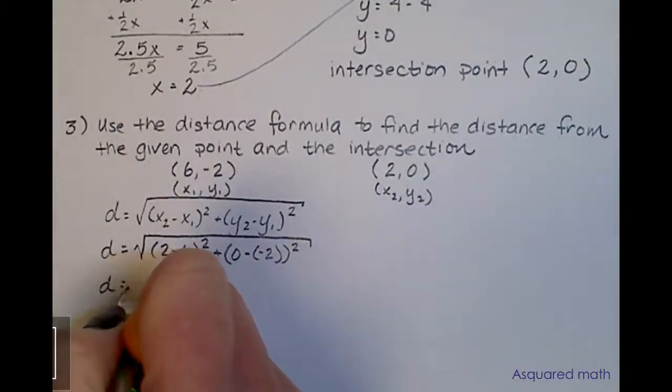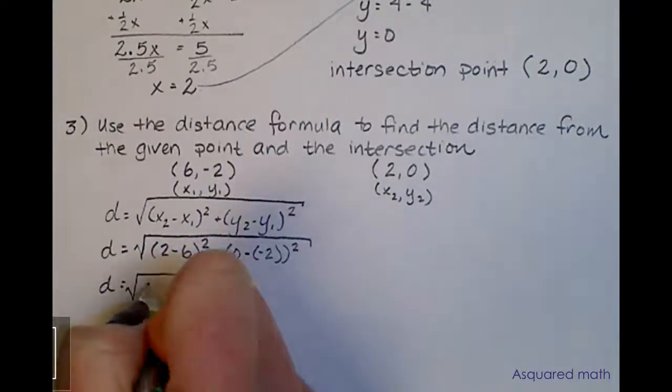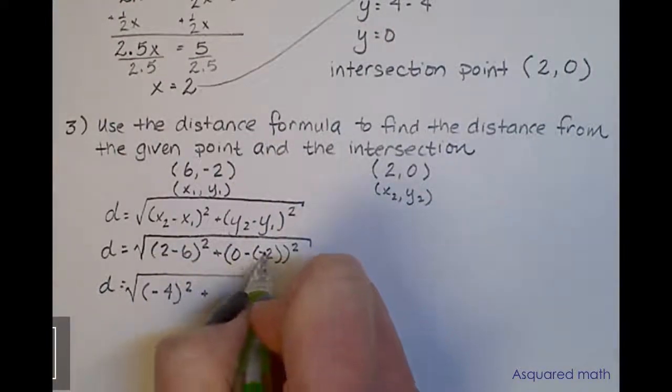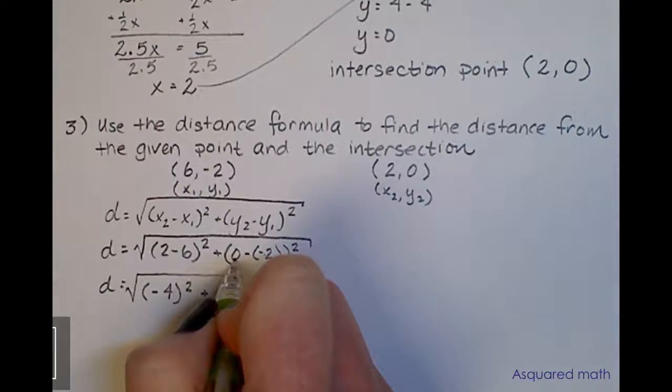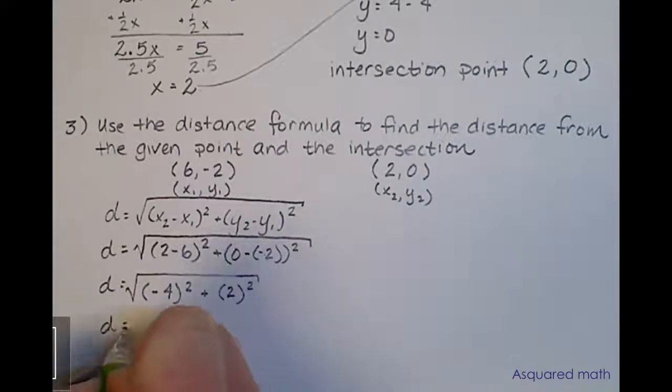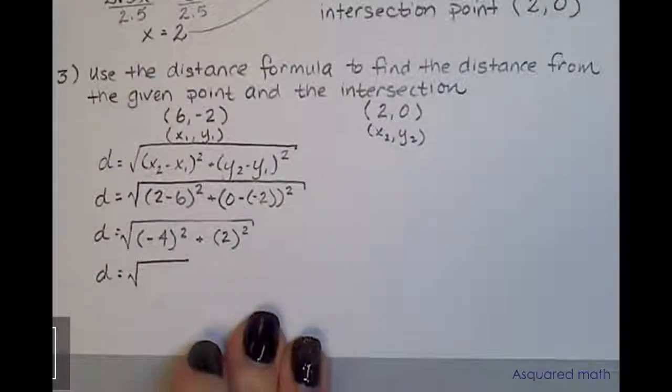We now get 2 - 6 is -4 quantity squared, plus negative times negative is positive, so we have 0 + 2 or 2 squared. We end up with -4 squared. Negative times negative is positive. 4 times 4 is 16.